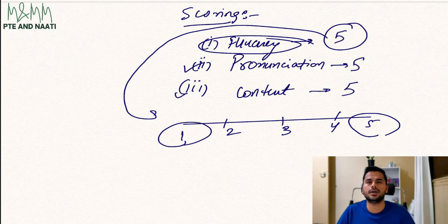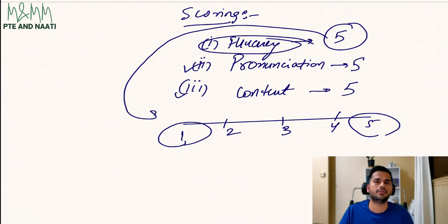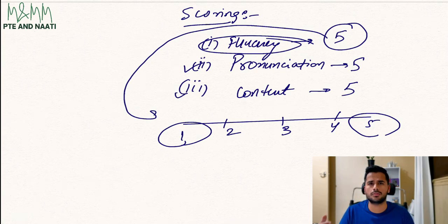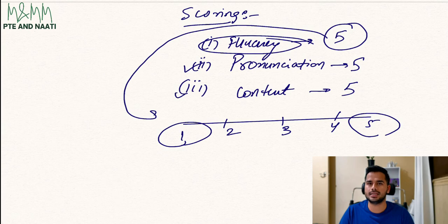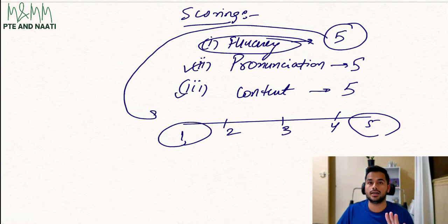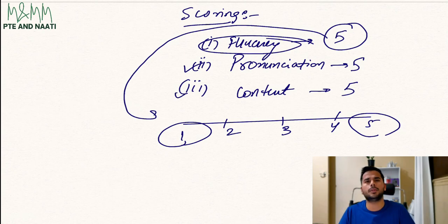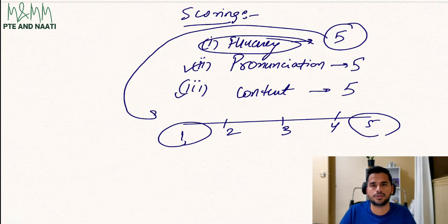What do we understand by fluency? Different people have different definitions, but in the real PTE exam, fluency simply refers to the smoothness of your speech. It has nothing to do with your speed, volume, or anything like that — those are part of pronunciation. Fluency simply refers to the smoothness of your speech.